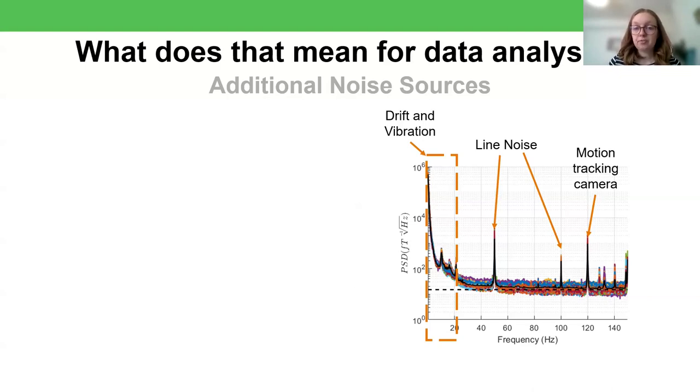You can see this one here that we recorded with our OPM system. In the low frequencies, we get a lot of noise from drift and vibration. So for example, that could be a car going past outside, or in our old lab it was the underground running underneath. And then there are peaks in the spectrum for line noise, as you might expect at 50 hertz, and then harmonics at 100 and 150. And then there are peaks from whatever equipment that we have in the room at the time. So in this case, there's a motion tracking camera which records at 120 hertz, and for which we see a corresponding peak in the noise spectrum.